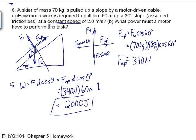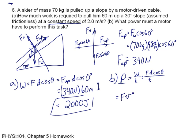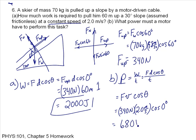For Part B, I want the power. Power equals work over time, which is Fd cosine θ over t. Since d over t equals v, this becomes Fv cosine θ. That is 340 newtons times 2 meters per second times cosine of zero, which equals 680 watts. Notice power is not dependent upon the displacement; it's the rate at which energy is used, so it doesn't matter how far they're going.